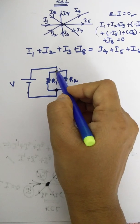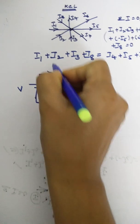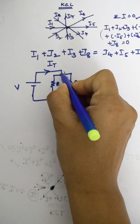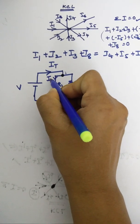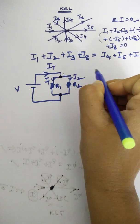If some current flows, obviously it will divide. Let us assume the total current as It. So this It is traveling like this. At this point it is dividing. Let us assume the first branch current as I1 and the second branch current I2.